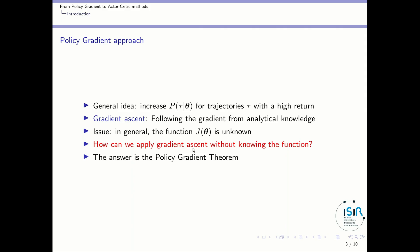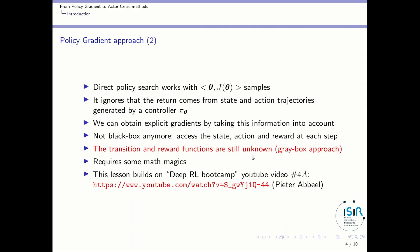The key question is: how can we apply gradient ascent without knowing this function? The answer is the policy gradient theorem. To compare to direct policy search: in direct policy search we work with samples theta and g of theta, ignoring the fact that g of theta comes from state and action trajectories generated by a controller p of theta.